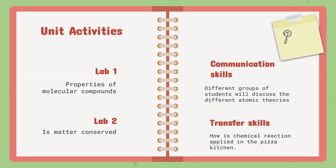As for the unit activities, we will have two labs. The first lab is properties of molecular compounds, where we will use table sugar and table salt to distinguish between them based on their different properties. The second lab is 'Is Matter Conserved?', where we will test the law of conservation of mass. As for skills, communication skills will involve students divided into groups, each discussing a different atomic theory up to the modern atomic model. For transfer skills, we will see how chemical reactions apply in real life in the pizza kitchen, along with other worksheets and group discussions throughout the unit.